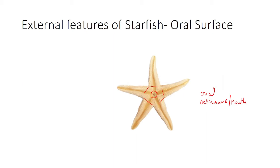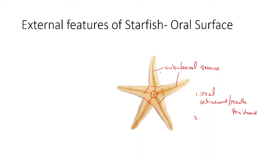The mouth is surrounded by a soft and delicate membrane known as the peristomal membrane or peristome. It is also guarded by oral spines or mouth papillae. The second structure is the ambulacral groove. From each angle of the mouth radiates a narrow groove known as the ambulacral groove, which runs along the middle of the oral surface in each arm.